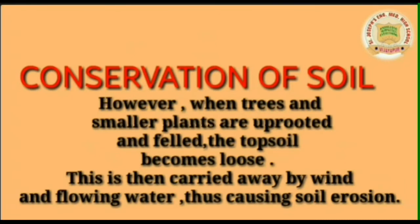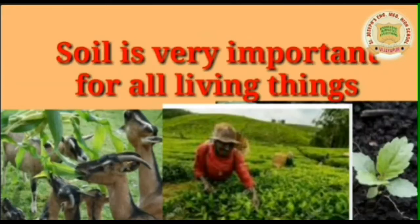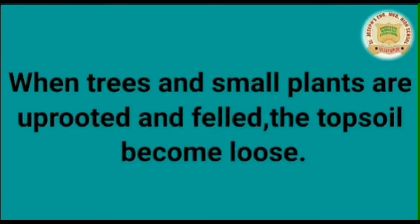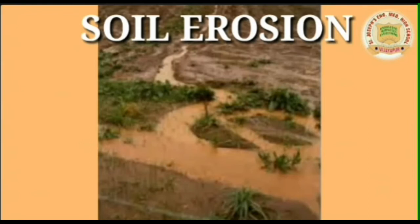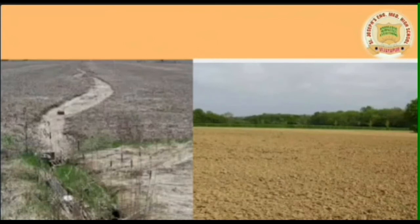Thus, terrace farming prevents soil erosion. Now comes conservation of soil. Soil is very important for all living things. Loss of soil leads to lesser vegetation and eventually results in barren and infertile land. It is therefore very important for us to prevent soil erosion by adopting various measures.